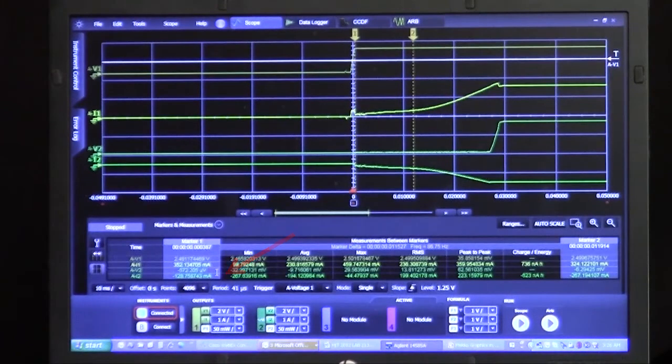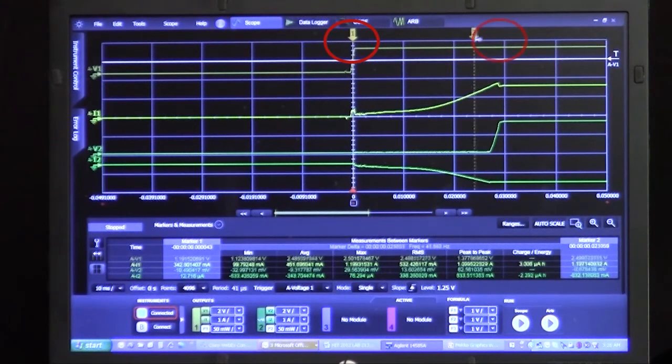So I've turned this on, this brings up markers, now I'll put marker number one on channel one where the power is applied, I'll put marker number two on channel two where the output finally comes up, and if I go right to here I can read off of that 28.8 milliseconds which is the startup time on this DC to DC converter.